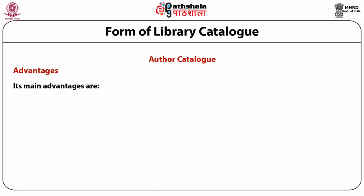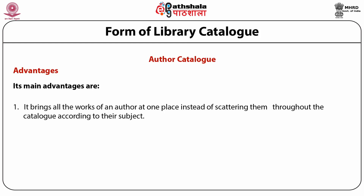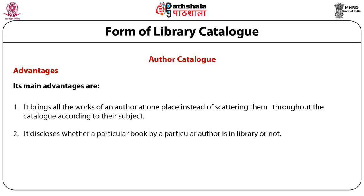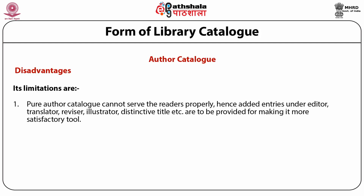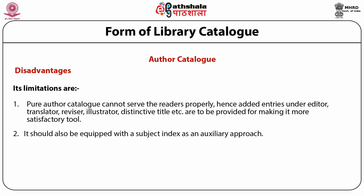Advantages of author catalog: first, it brings all the works of an author at one place instead of scattering them throughout the catalog according to their subject. Second, it discloses whether a particular book by a particular author is in the library or not. Disadvantages of author catalog: first, a pure author catalog cannot serve readers properly, hence added entries under editor, translator, reviser, illustrator, distinctive title, etc. are to be provided to make it a more satisfactory tool. Second, it should also be supplemented with a subject index as an auxiliary approach.